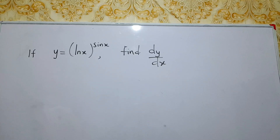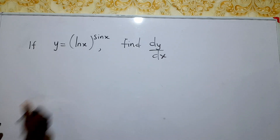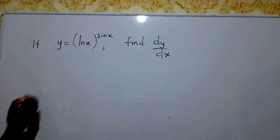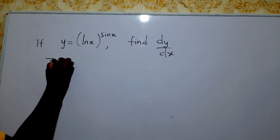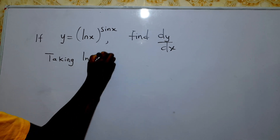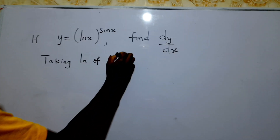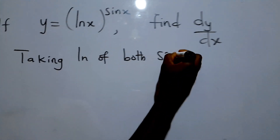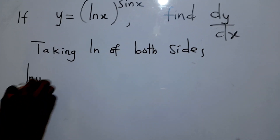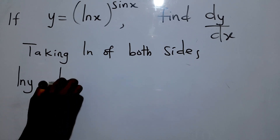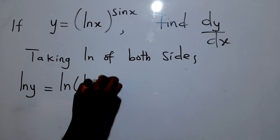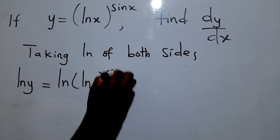The first thing we need to do is to drop the sin x exponent, and we can do that by taking ln on both sides. So taking ln on both sides, we can say ln(y) equals ln of the quantity ln(x) raised to sin(x).